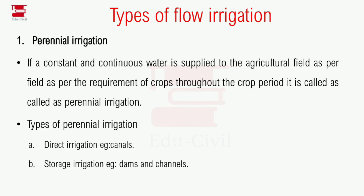For example, dam and channels are used in storage irrigation. Perennial irrigation means continuously and constantly supplying water throughout the crop period as per the crop requirement. That is the concept of perennial and storage irrigation.